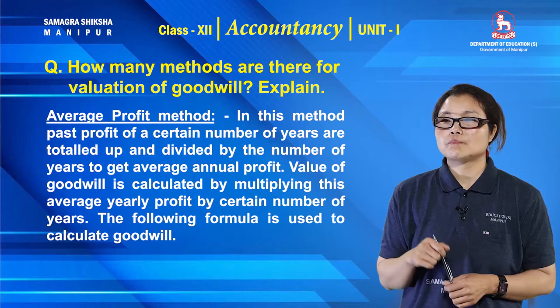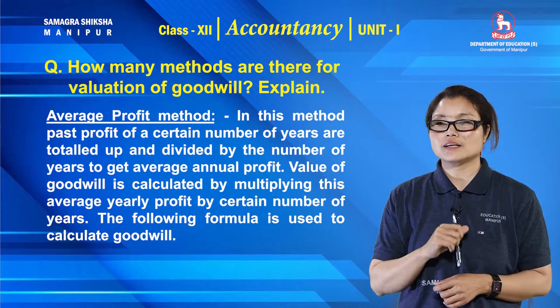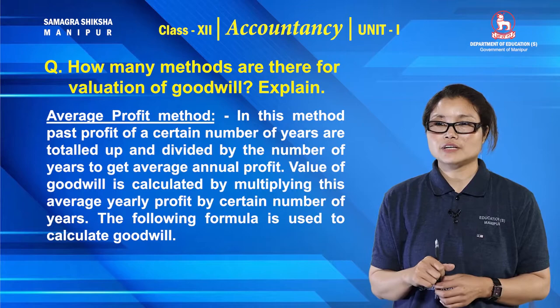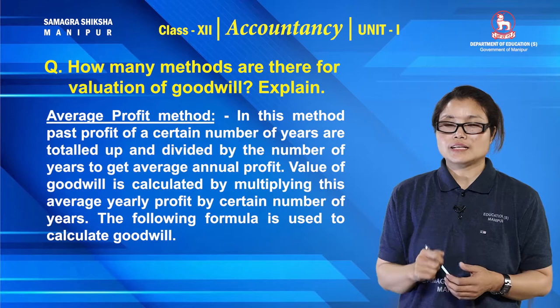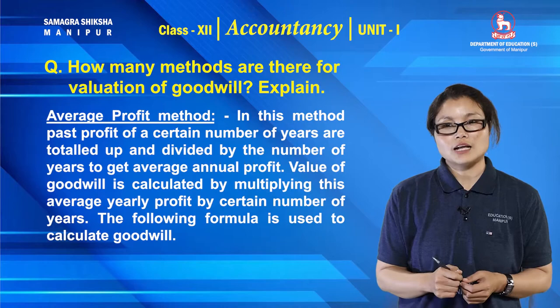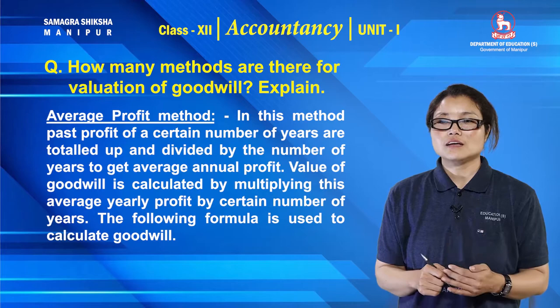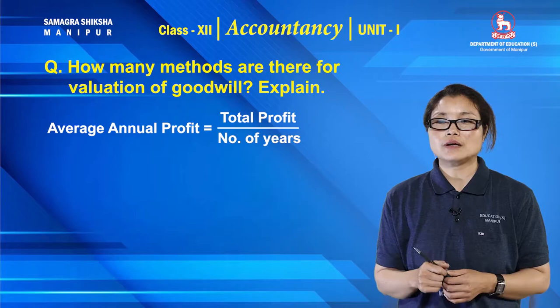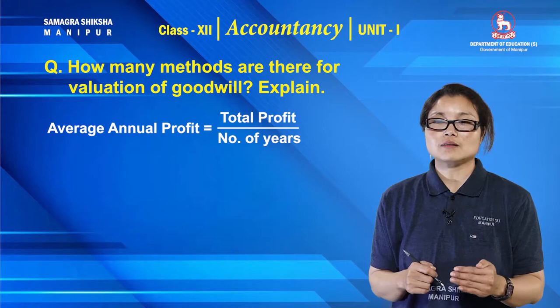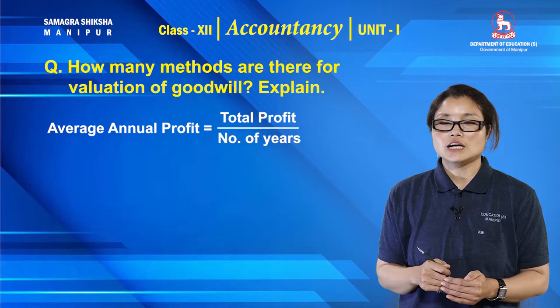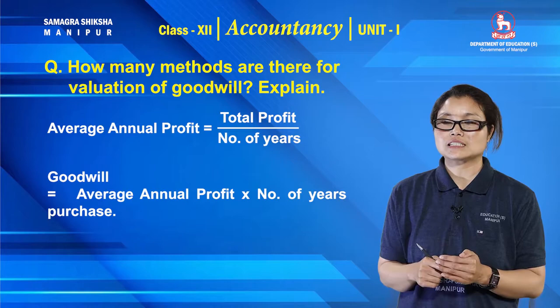In the average profit method, the past profits of a certain number of years are totaled up and divided by the number of years to get the average annual profit. Then the value of goodwill is calculated by multiplying this average yearly profit by a certain number of years purchase. The formula is: average annual profit equals total profit divided by number of years.